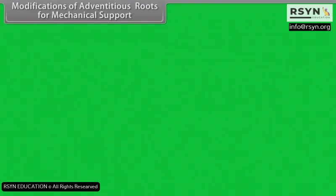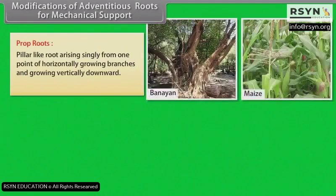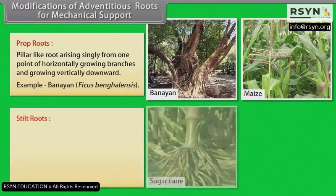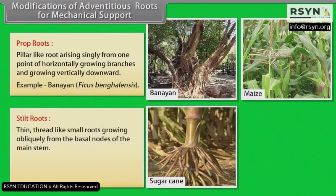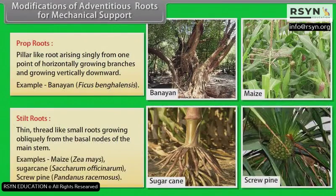Modifications of adventitious roots for mechanical support. Prop roots: Pillar-like roots arising singly from one point of horizontally growing branches and growing vertically downward. Example: banyan. Stilt roots: Thin, thread-like small roots growing obliquely from the basal nodes of the main stem. Examples: maize, sugarcane, screw pine.